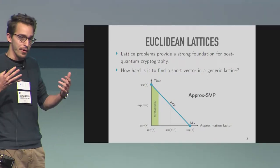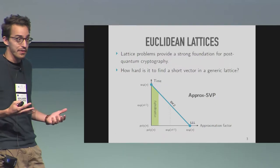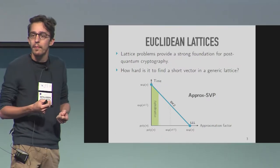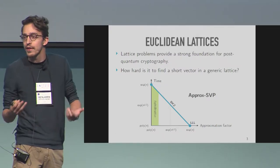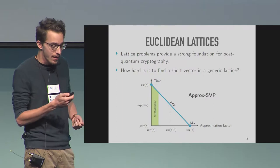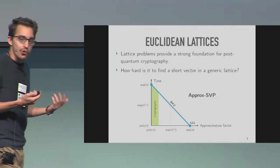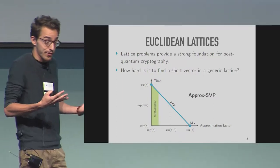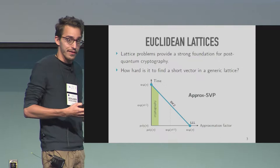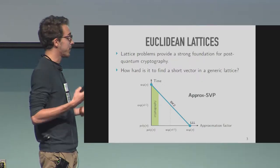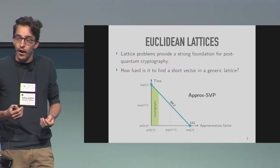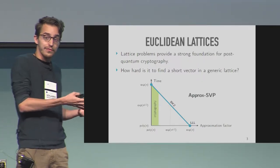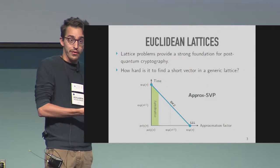You want to build cryptographic schemes whose security relies more or less on the problem of finding short vectors in such Euclidean lattices. How short you want to find vectors will determine the difficulty of the problem. On any lattice, you have some shortest vectors — these are the hardest to find.